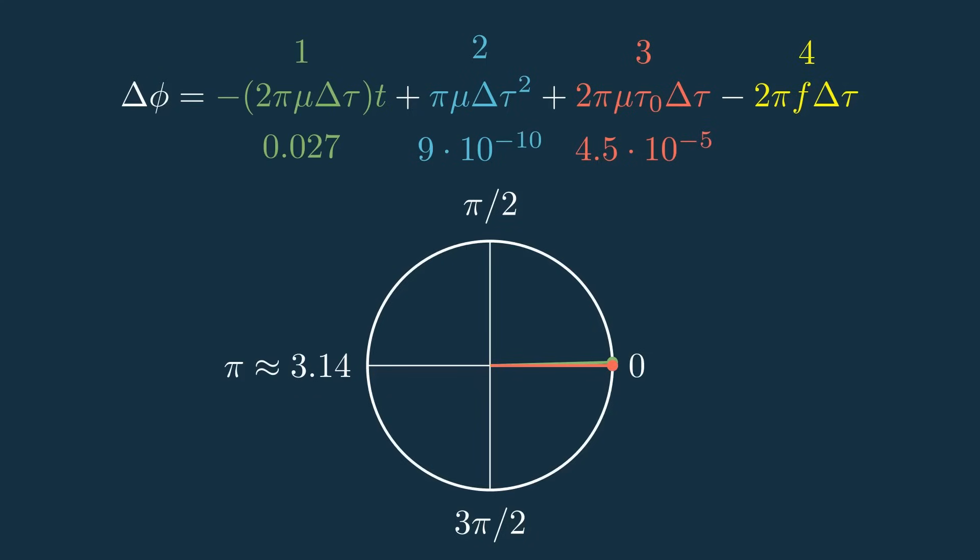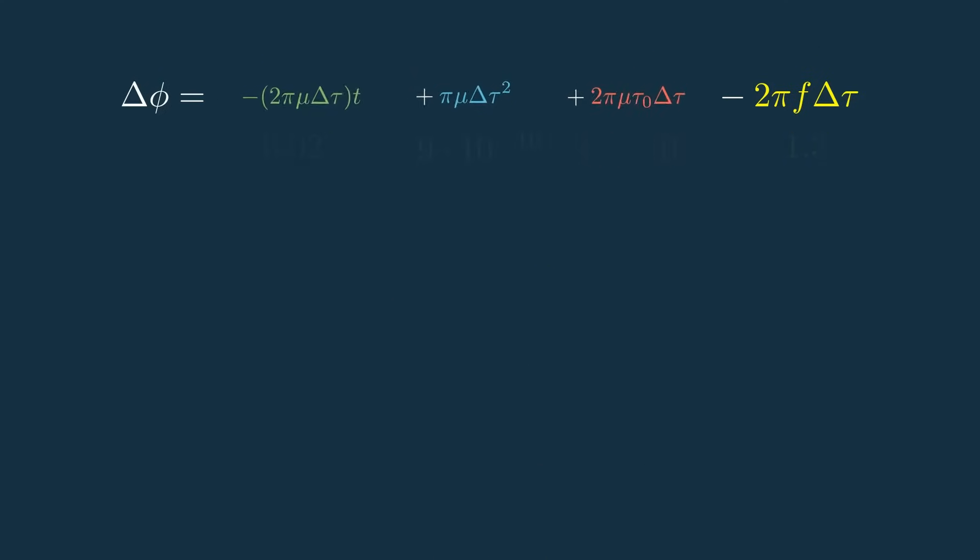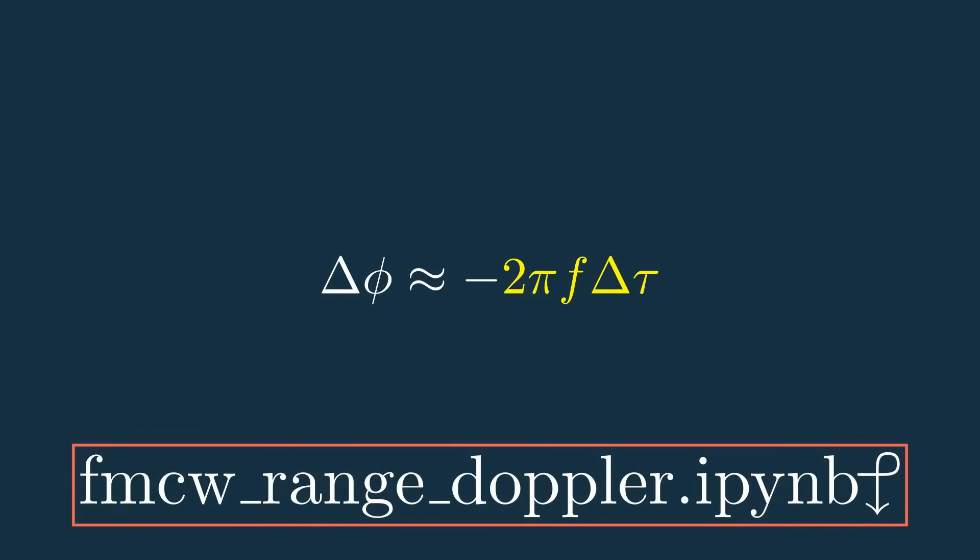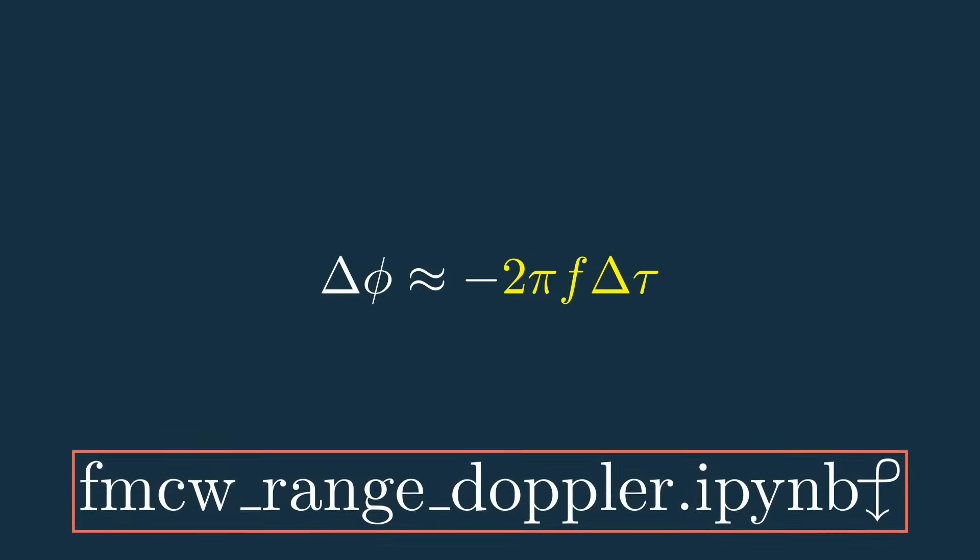Now the fourth is the most interesting because it's directly proportional to the target's change in return time due to velocity and comes out to about 1.3 radians, by far the largest of the previous three. Because of this we can approximate that the phase delta is equal to 2pi times the radar's frequency times the time shift from chirp to chirp due to the velocity. And if you want to dive into this equation more, you can check out the notebook in the description.